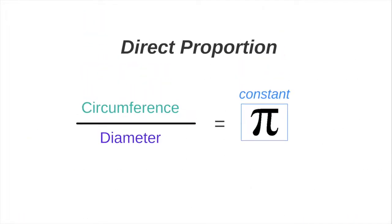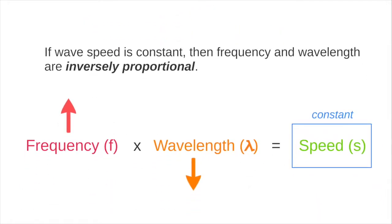In direct proportions where x over y is a constant, like circumference over diameter, then when x doubles, y doubles as well. By contrast, when x is inversely proportional to y, then when x doubles, y is cut in half.